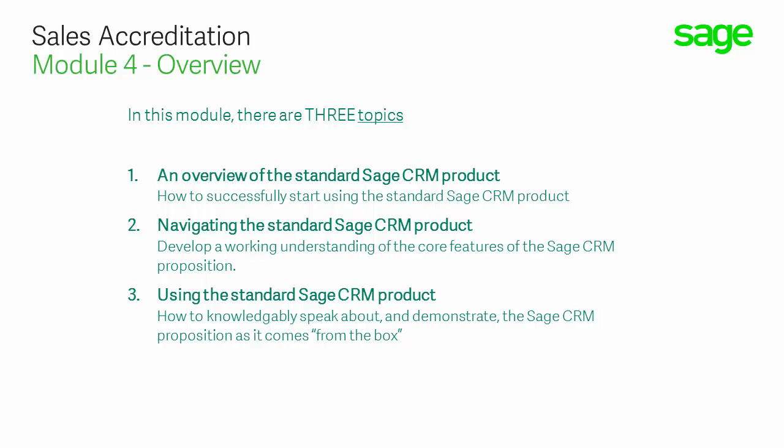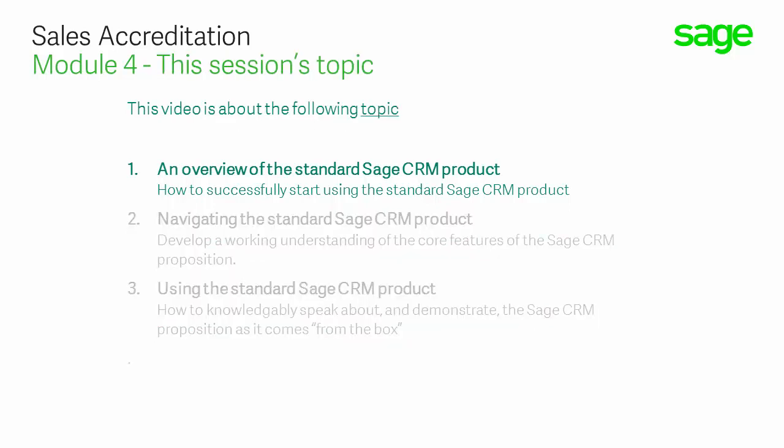Once you've completed each topic, and thus the module, you'll understand the role that customer relationship management concepts play within business, how to knowledgeably speak about and demonstrate competence in the translation of CRM capabilities for any business, and how to successfully articulate the Sage CRM value proposition. When you've completed the topics, you'll be required to sit an exam, if you wish to gain certification for the entire module. Here is the topic we're focusing on in this video — approximately 20 minutes in duration — with information specifically on the overview of the standard product and how you gain access to it. Once you've completed this topic, you should move on to the further topics and thus complete the module.